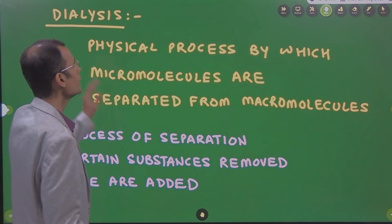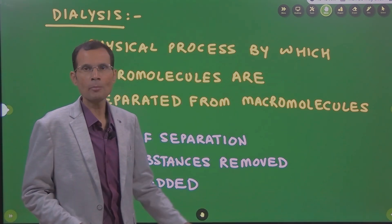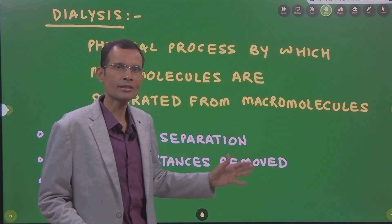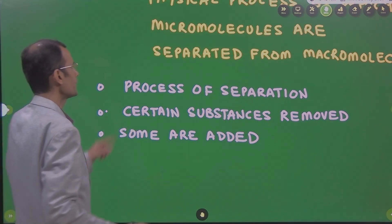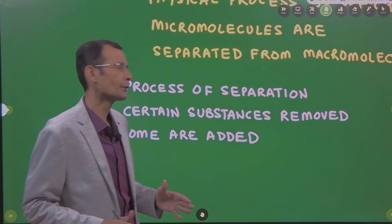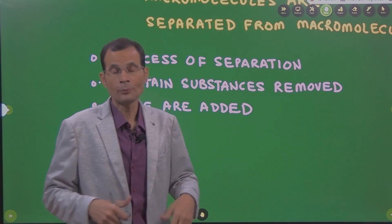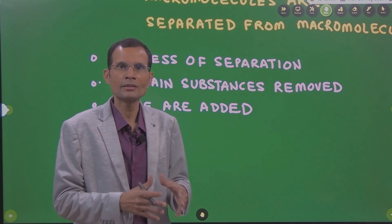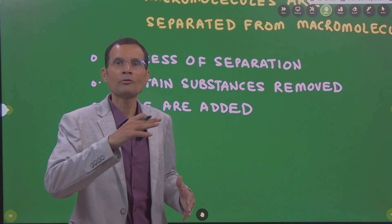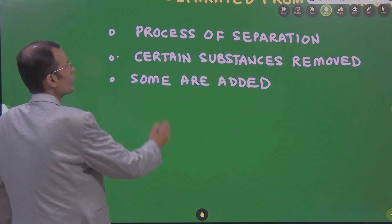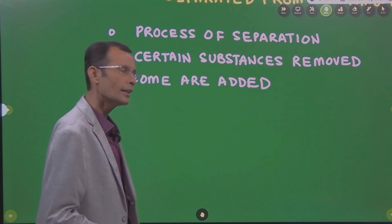By definition, dialysis is the physical process by which micromolecules are separated from macromolecules — we saw that sodium chloride, the micromolecule, is separated from protein, the macromolecule. Basically this is a physical process of separation. In the context of blood dialysis, there are substances in the blood — some are required, some are waste products — we separate the two and waste products are eliminated. Certain substances are removed and some are also added, as we saw water got added into the bag.